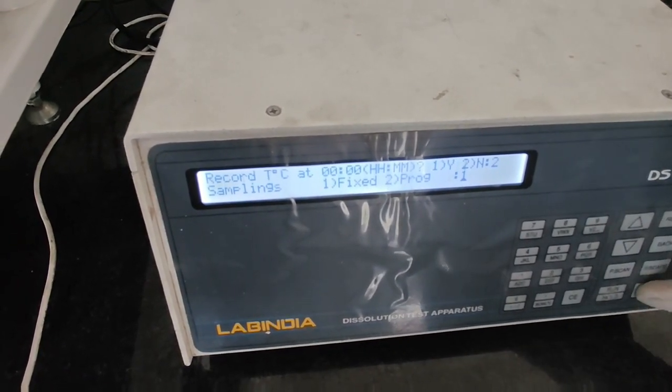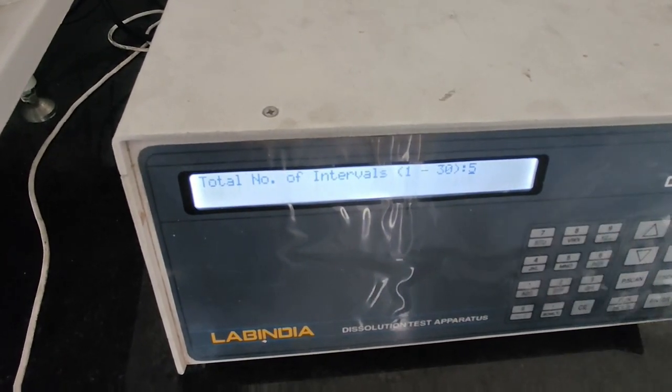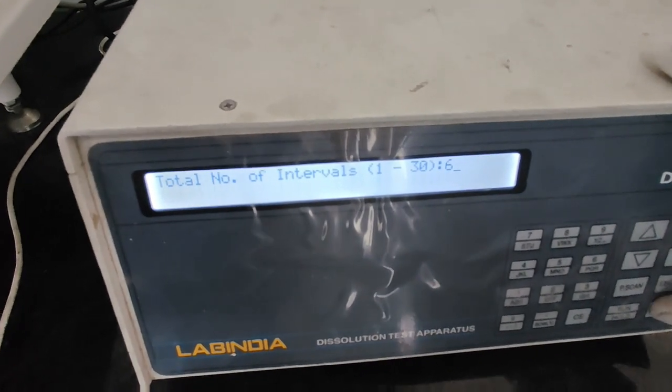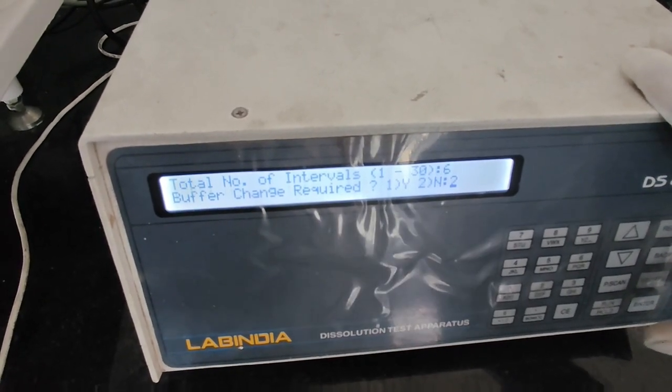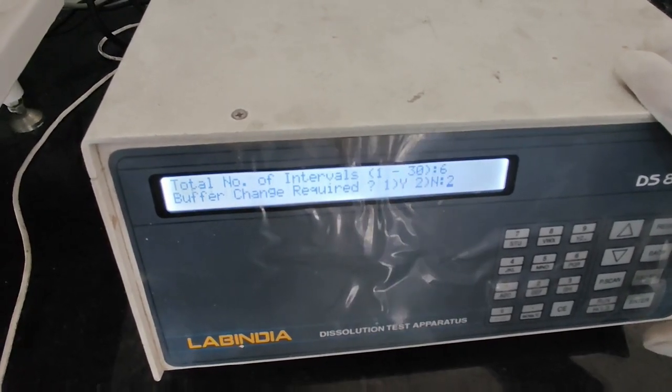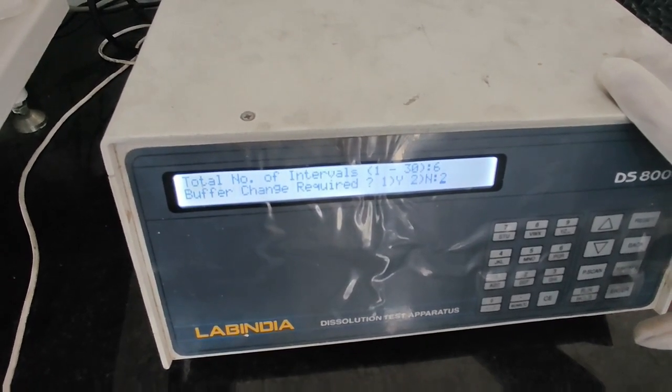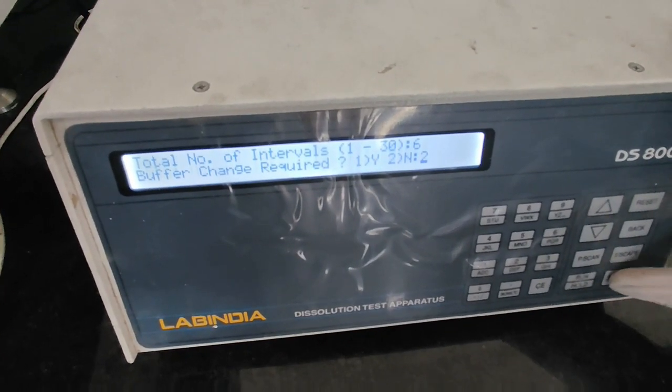Then samplings are already fixed. Then total number of intervals: how many intervals you want to take. For example, I want to take 6 intervals. I will enter it, then press enter. Then buffer change is required. For paracetamol, no buffer change is required. I am doing it in distilled water. In case of enteric-coated tablets, buffer change is required. In that case, you may select yes. But in my case, it is no. So I will press enter.